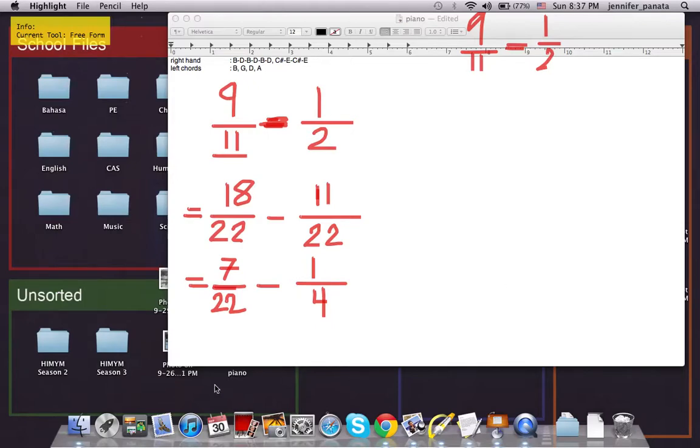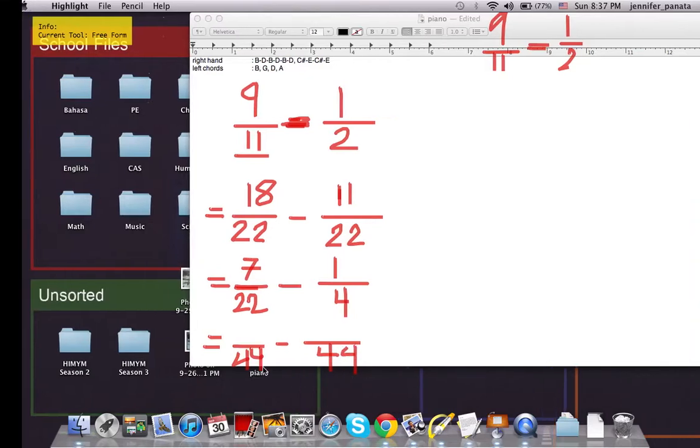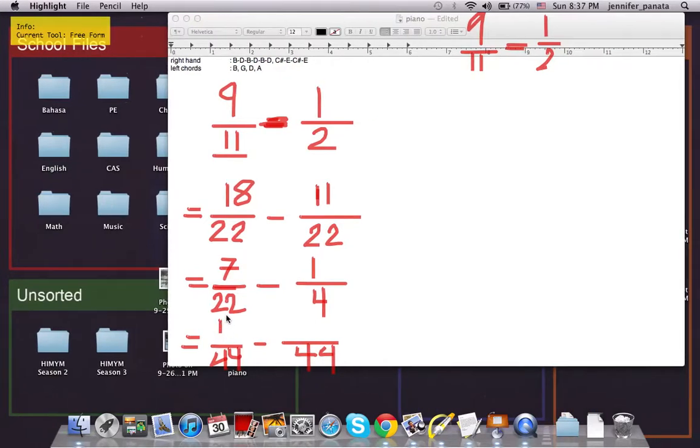And so, we need to make the denominators the same again. So that will be 44. So again, we minus that.